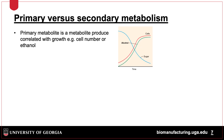Primary and secondary metabolites differ typically in the timing of their appearance relative to cell growth. Primary metabolites are usually produced as part of metabolism to generate energy and are linked to the growth of cells. In this example, the production of ethanol parallels the increase in the number of yeast organisms as the sugar substrate is consumed.